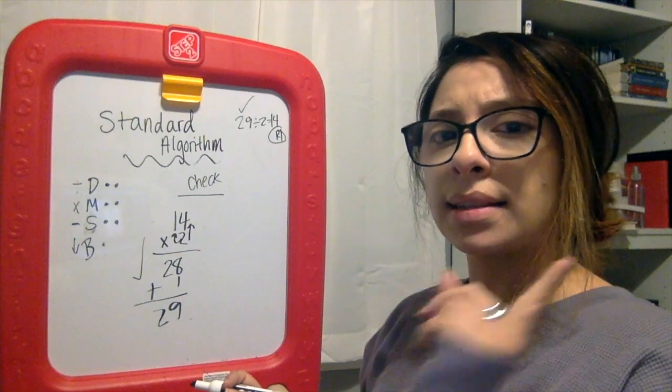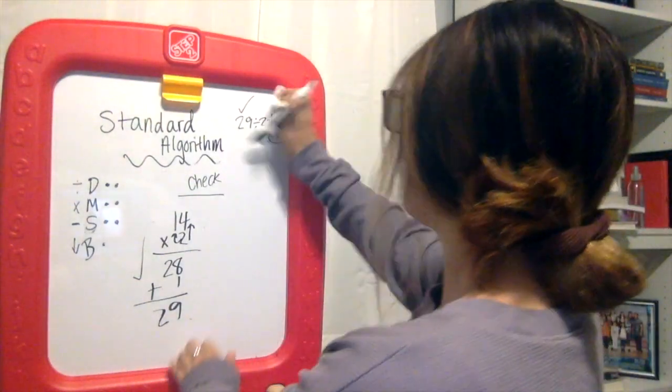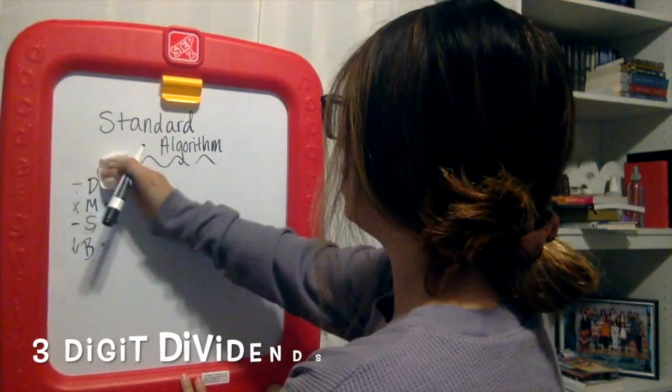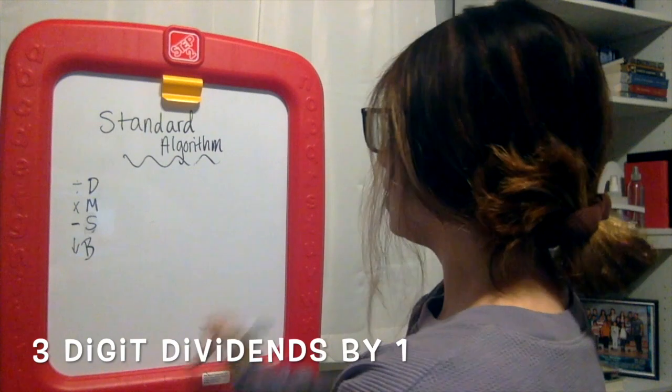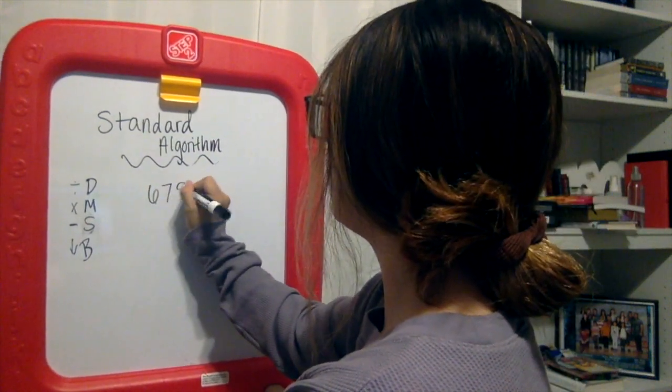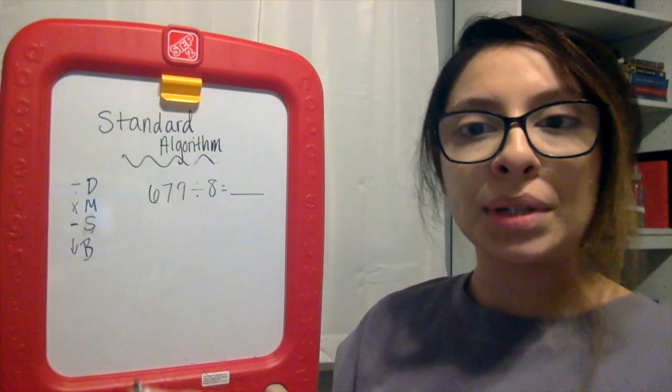So that's just a simple two-digit by one-digit. Now let's get into something a little bit more complicated or confusing. So I'm going to leave this up for us to come back to.